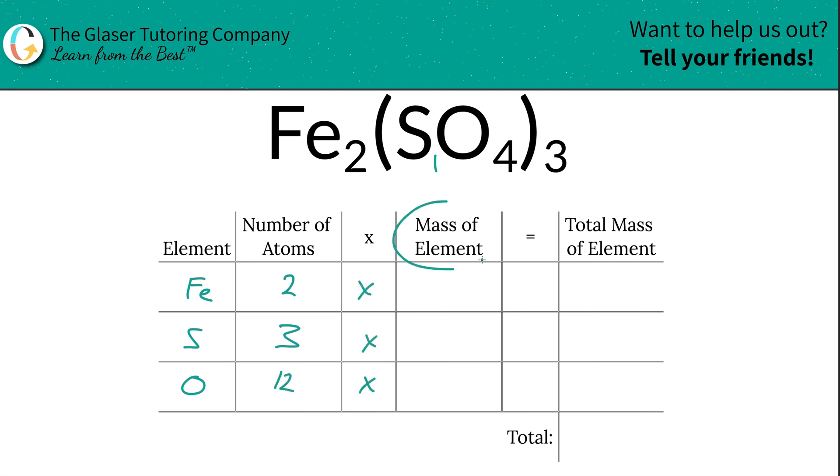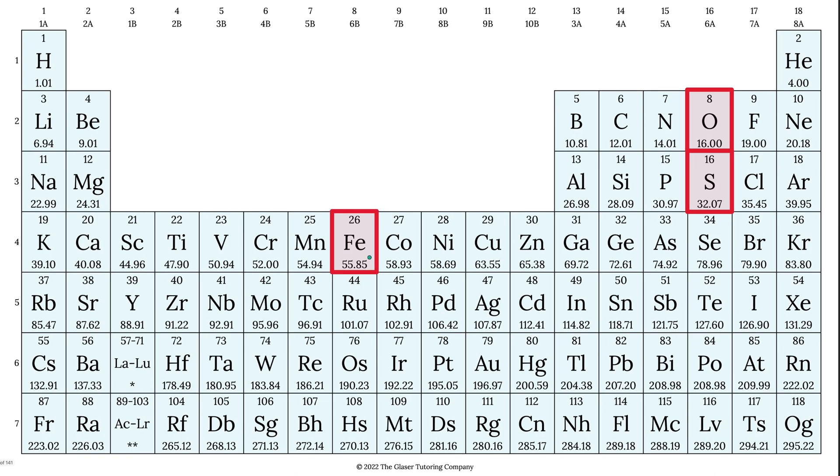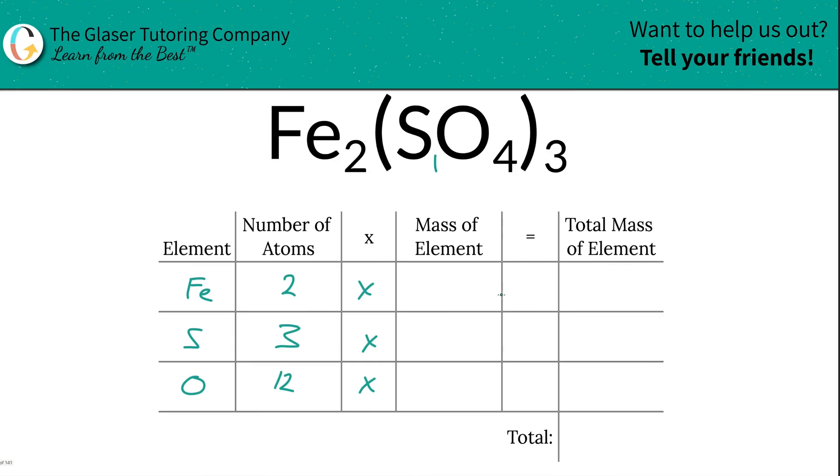Next, we take the number of atoms and multiply it by the mass of each element from the periodic table. Iron is 55.85, oxygen is 16, and sulfur is about 32.07. We write these values down in our table.